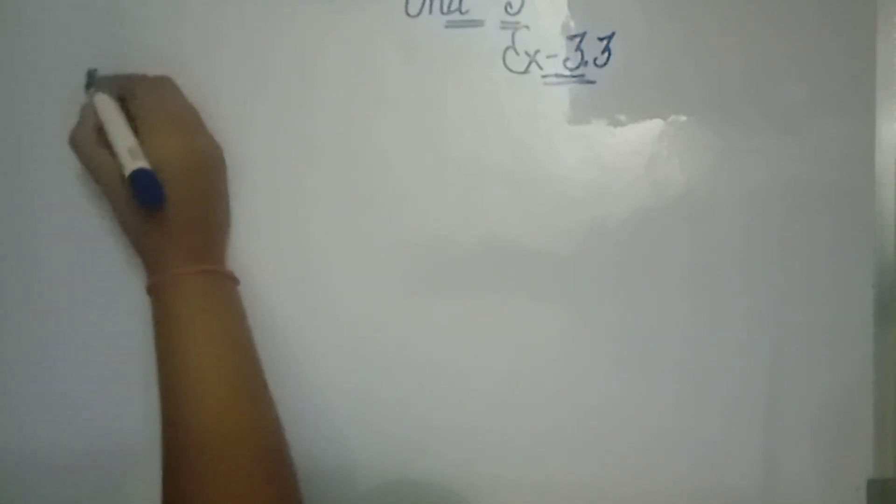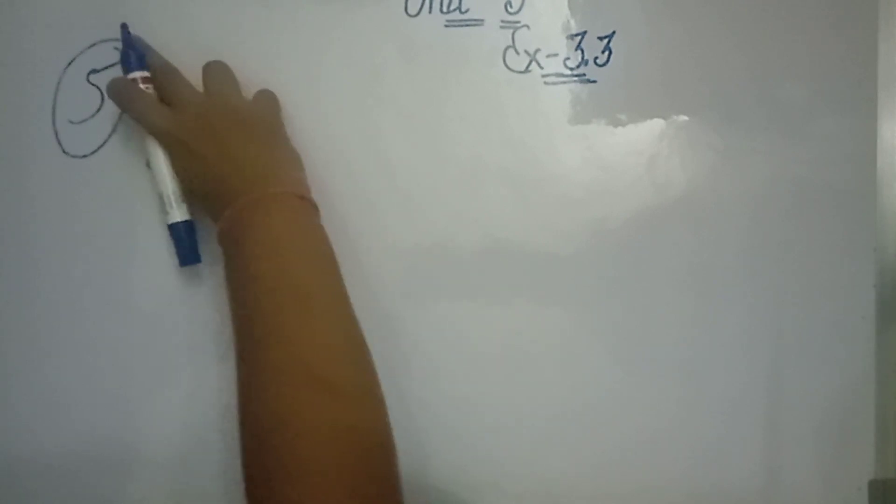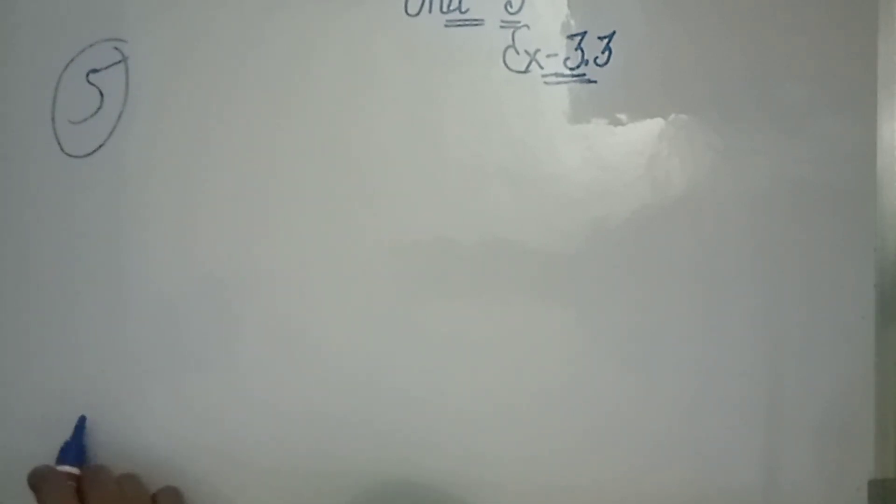Hello students, welcome to whiteboard classroom. Today we are starting question number 5, Exercise 3.3. Write the smallest digit and the largest digit in the blank space of each of the following numbers so that the number formed is divisible by 3.